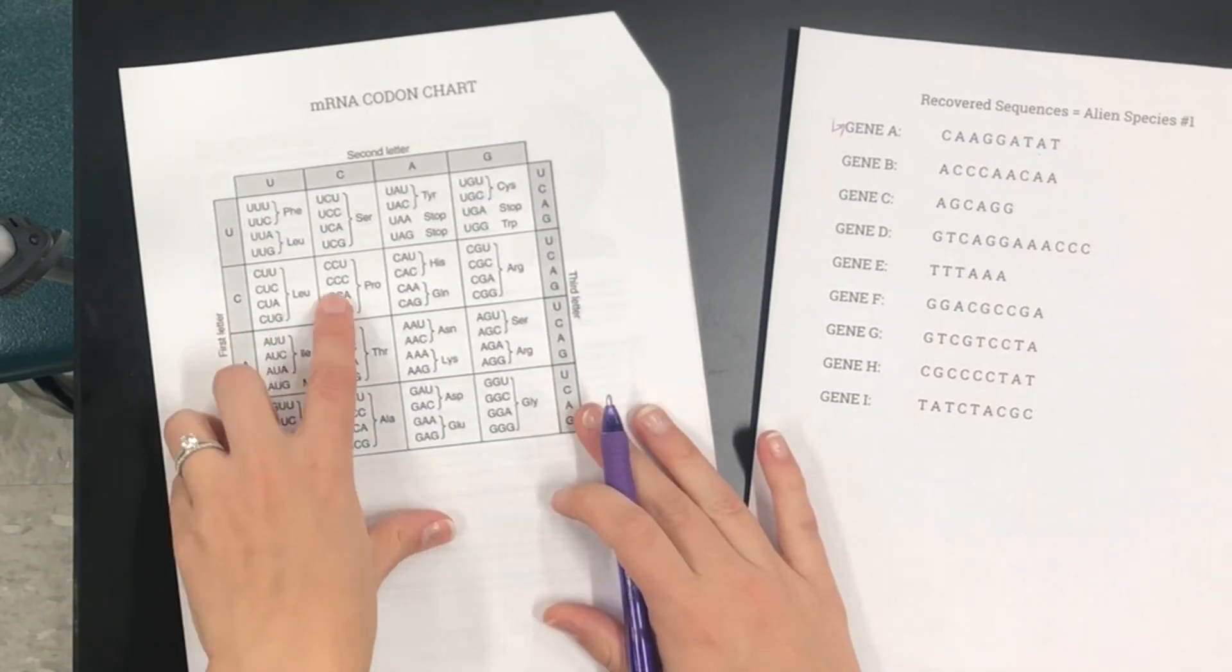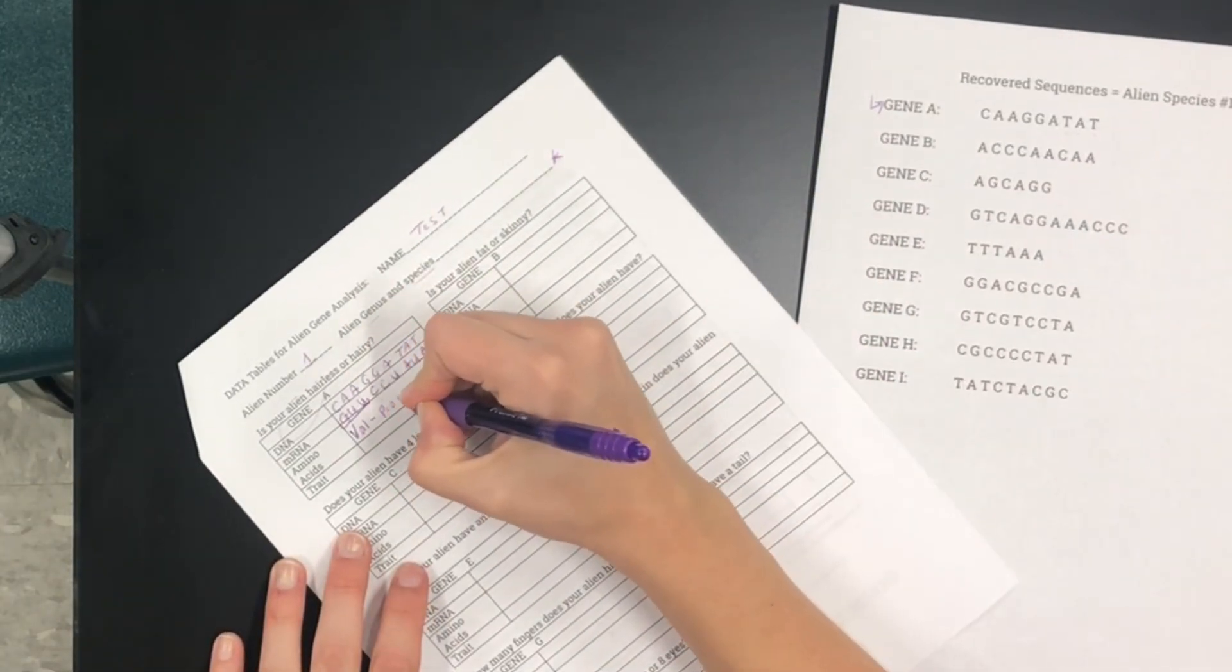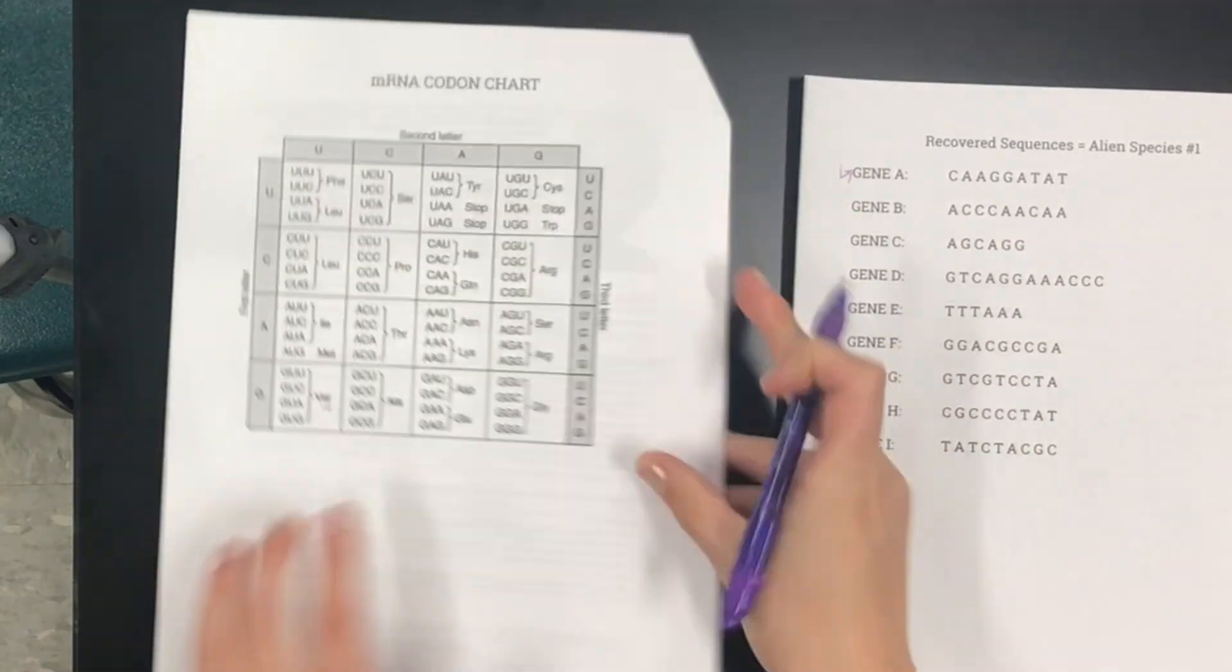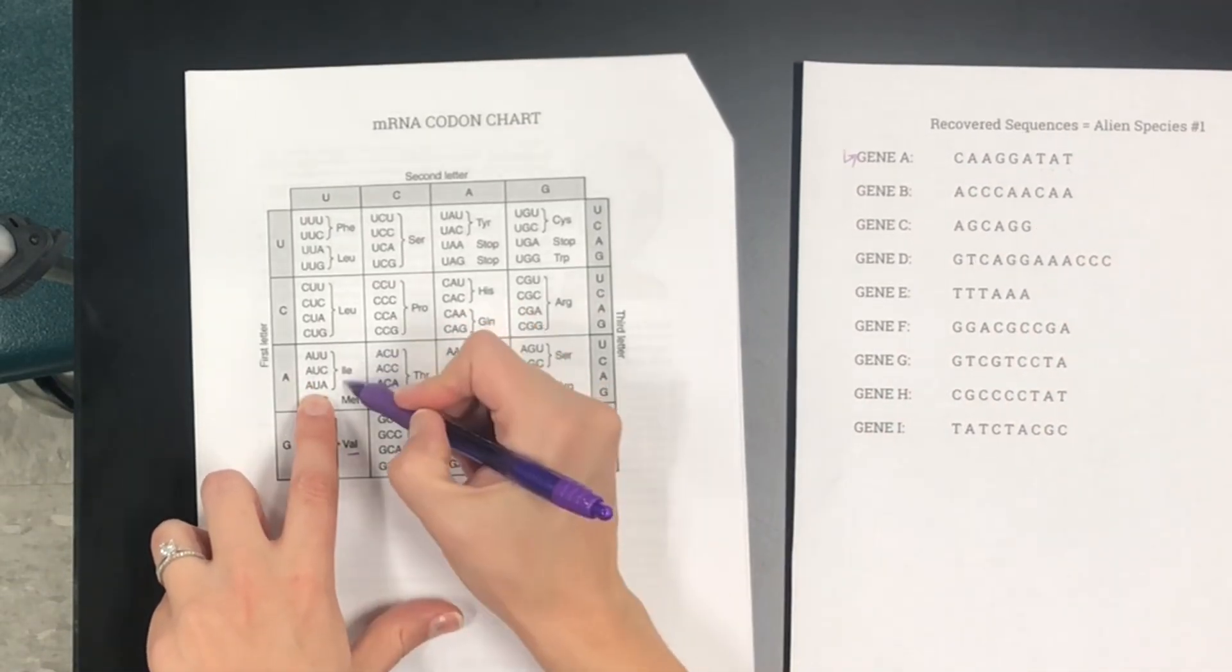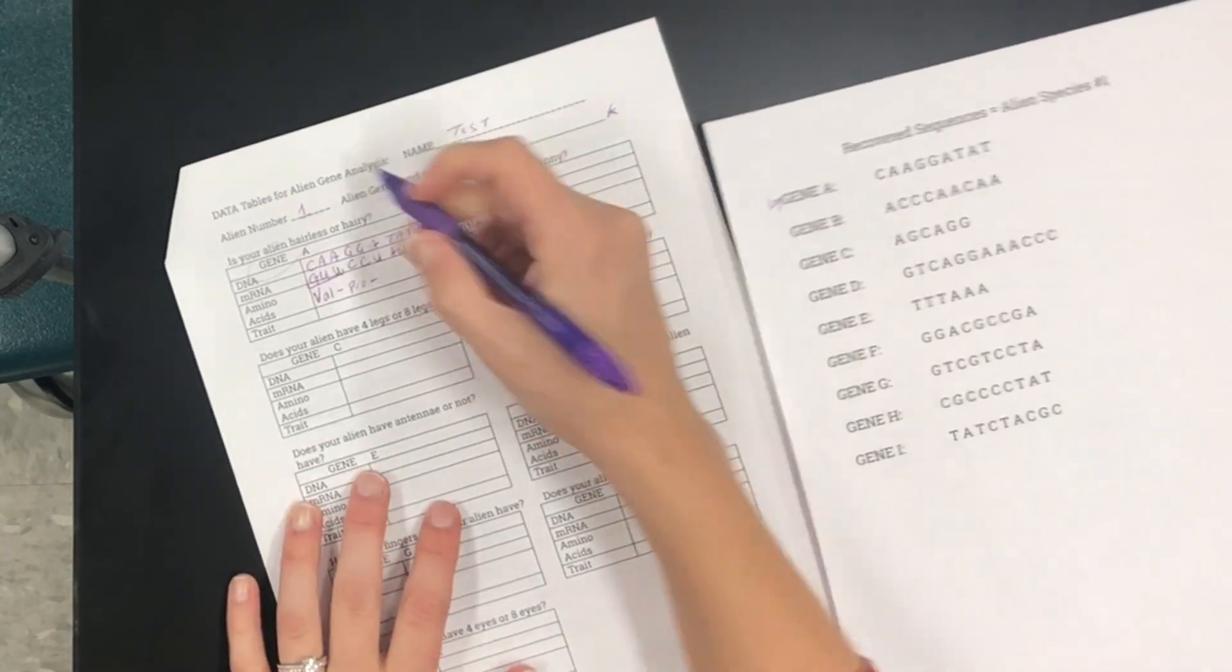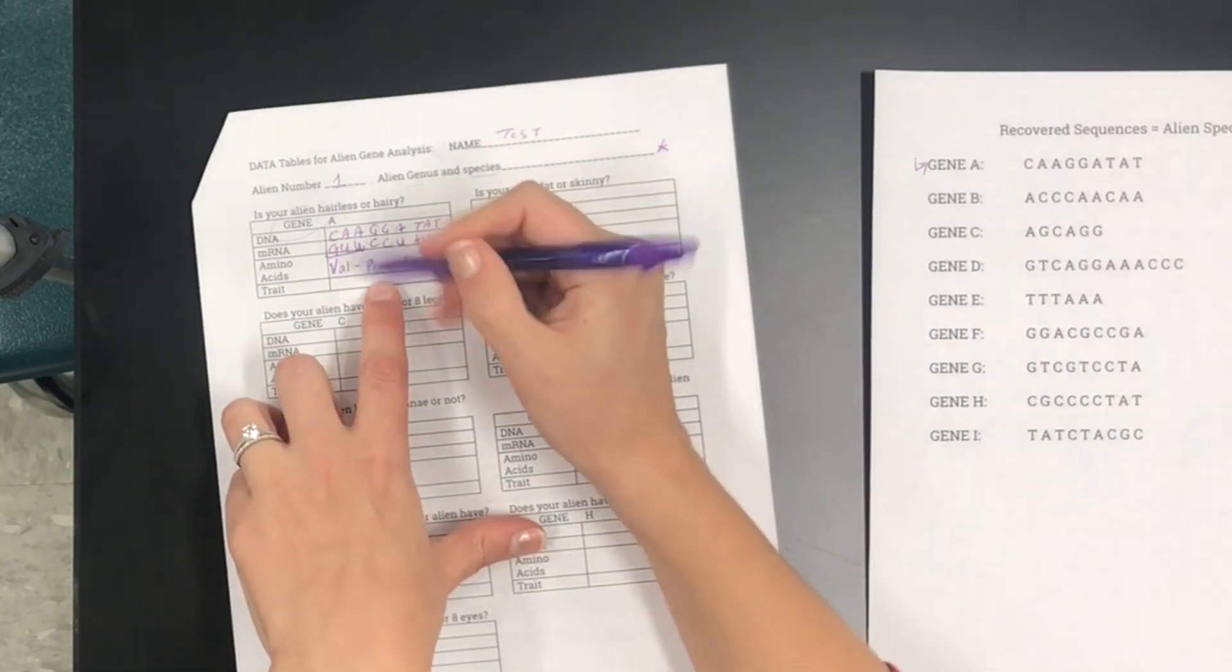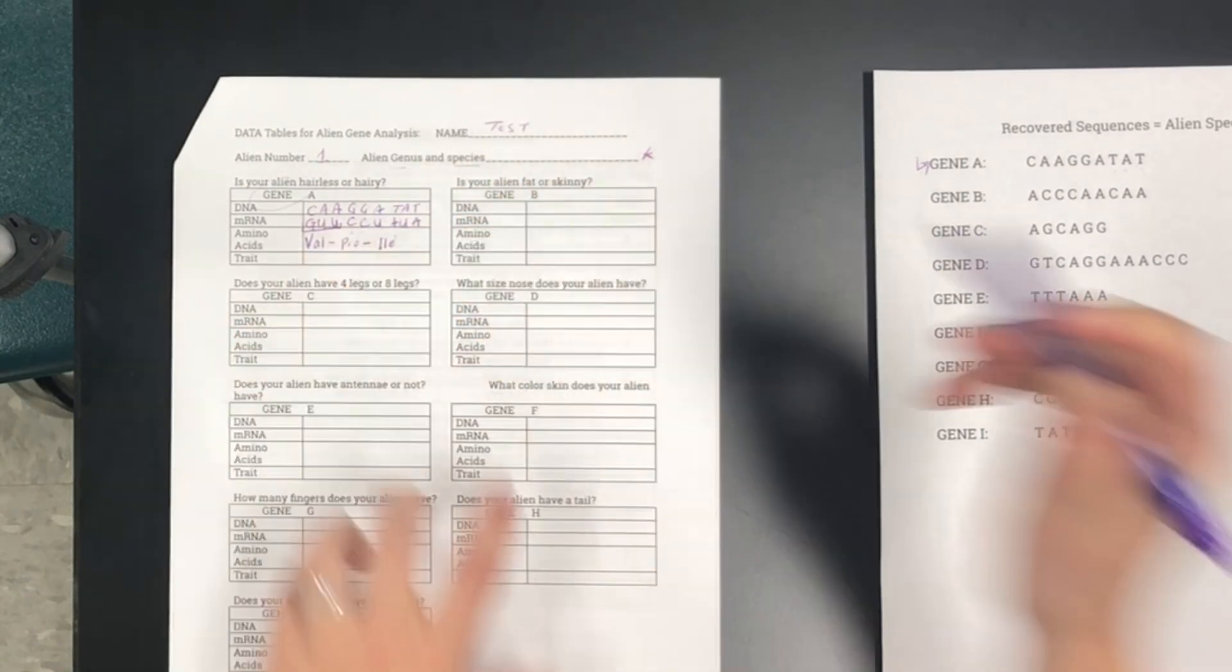Next up CCU. All right let's find it. CCU pro for proline and our last amino acid AUA, flip it over, AUA is isoleucine and so that's abbreviated as ILE on this sheet. It's sometimes abbreviated in a different way which I'll show you in just a second. All right so now we're going to find the trait that corresponds with this amino acid sequence. We have valine, proline, and isoleucine.